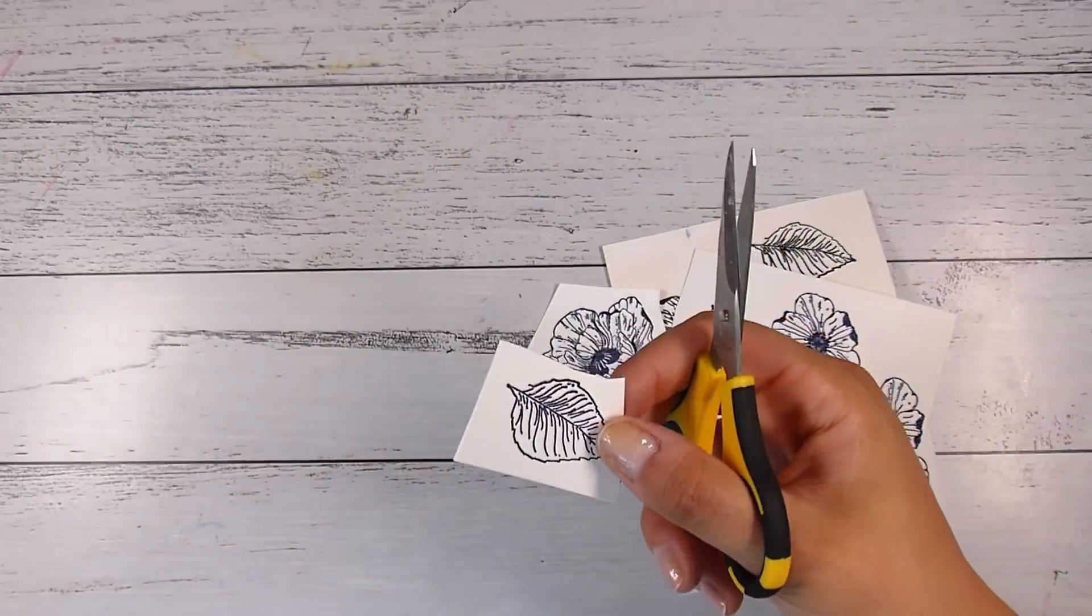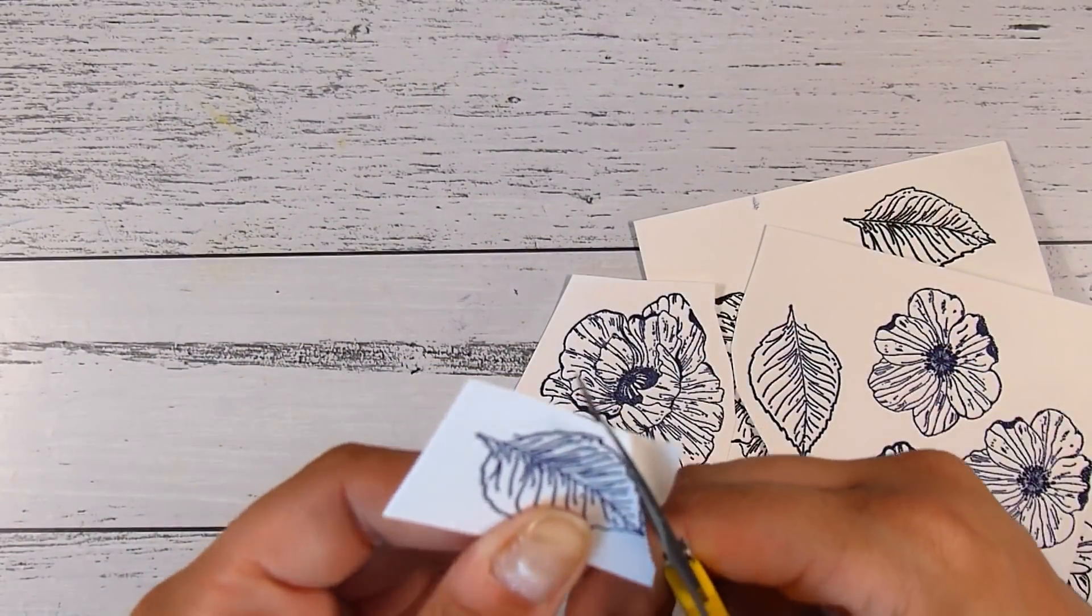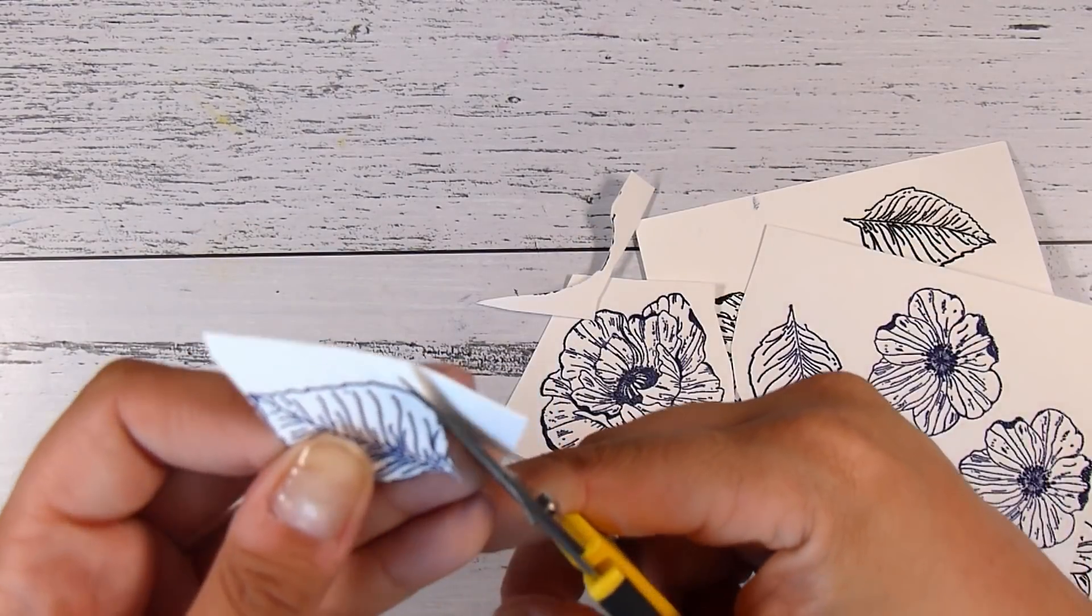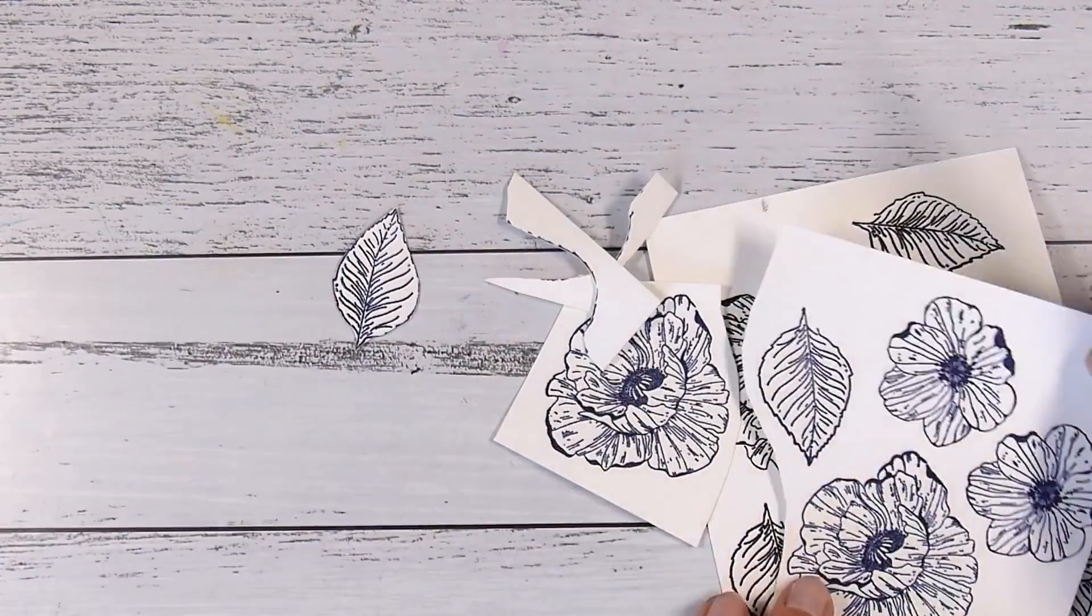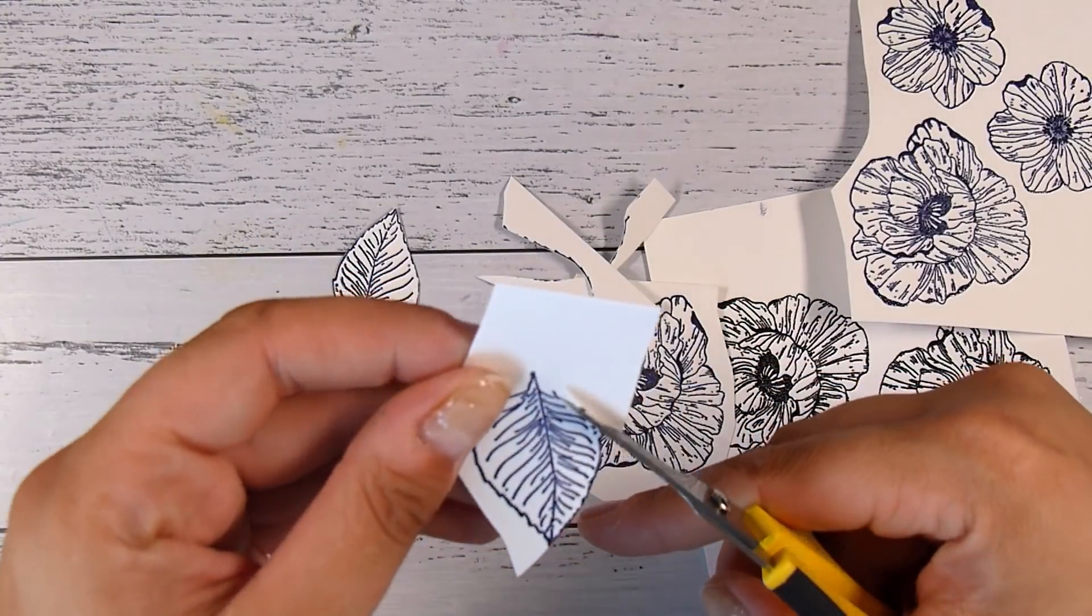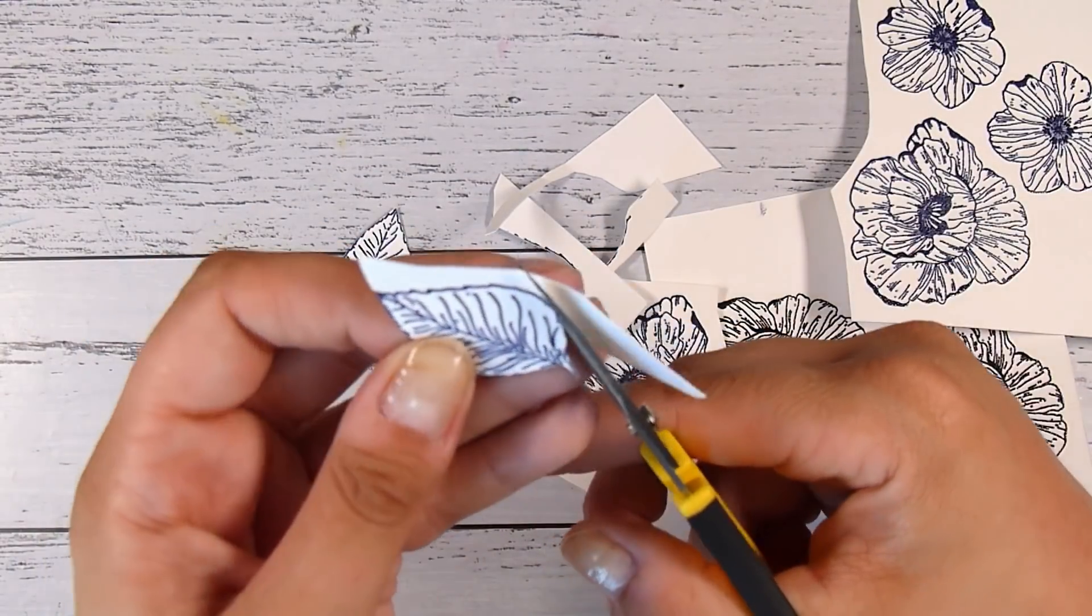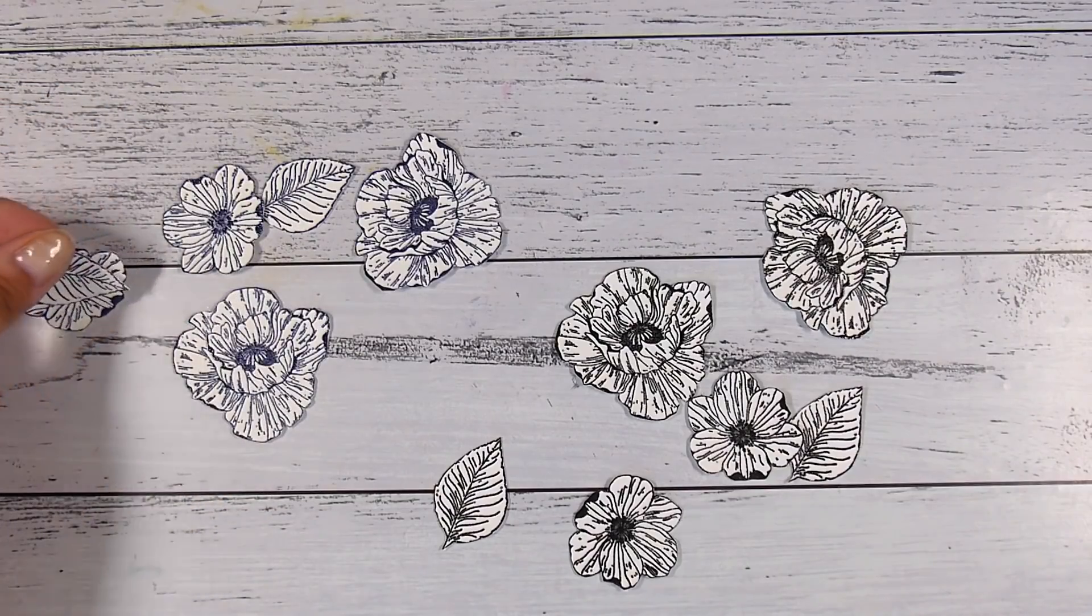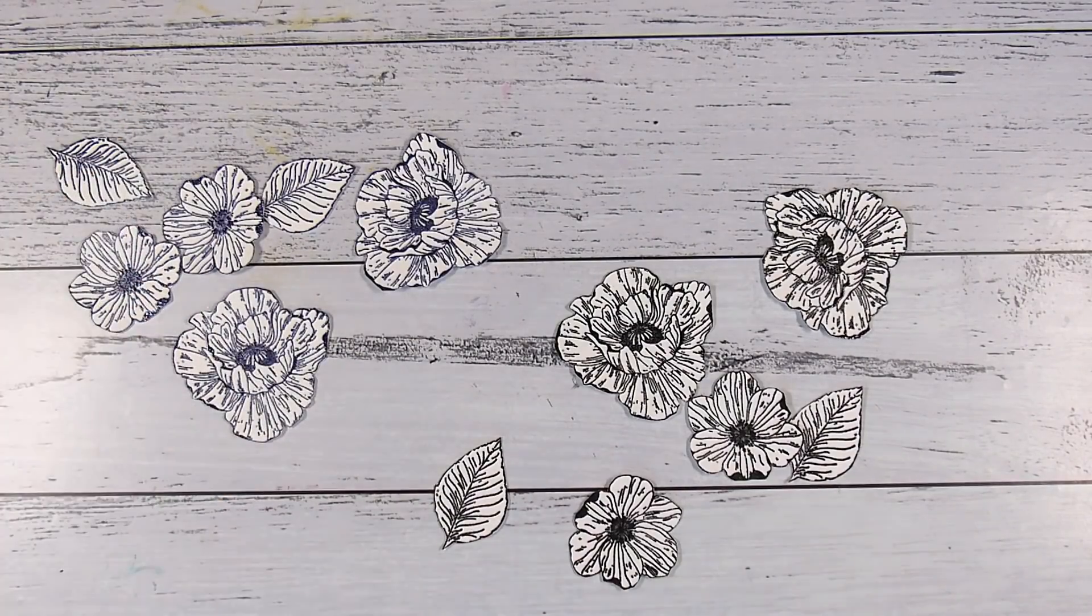I never really buy coordinating dies anyway, so I'm going to fussy cut out these images. Even with these leaves, I just go straight around the edges and they look fine. Even though there is that little crinkly detail, pop straight around the edges and I'm good to go.